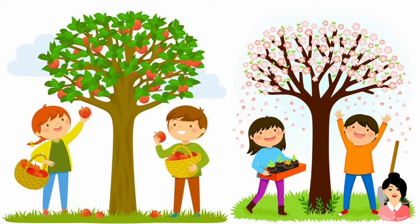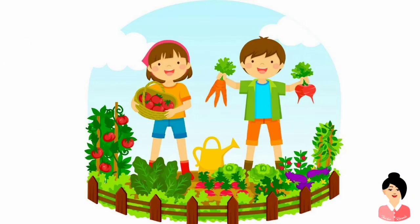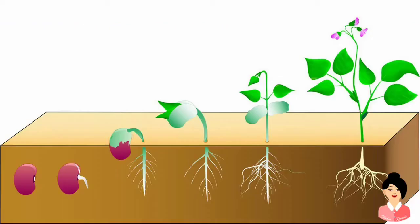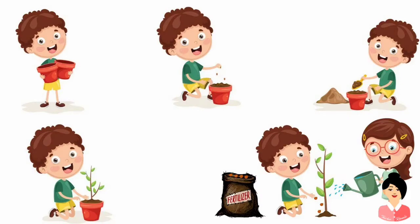Plants are very useful to all human beings as well as animals. We get fruits and vegetables from plants. Human beings grow plants to satisfy their needs. We get cotton from the cotton plant. A seed is sown under the soil, a seedling grows from the seed, and the seedling grows into a beautiful plant. We should grow more plants to make our nature more beautiful.